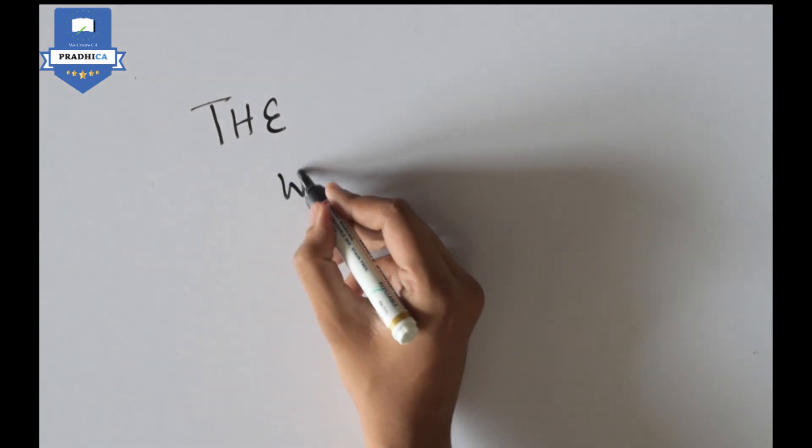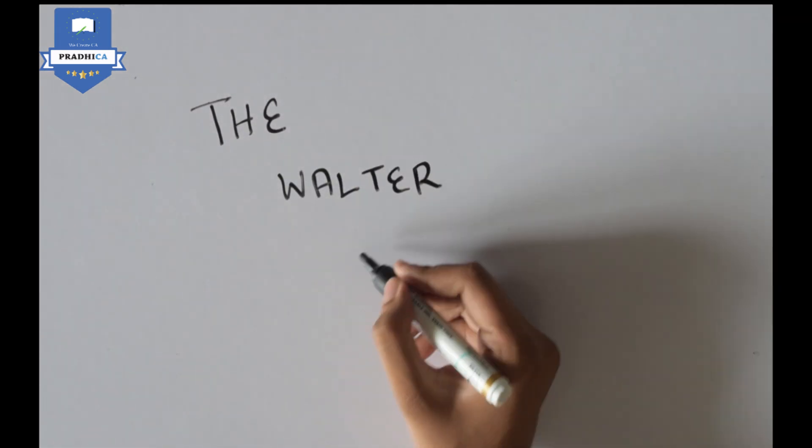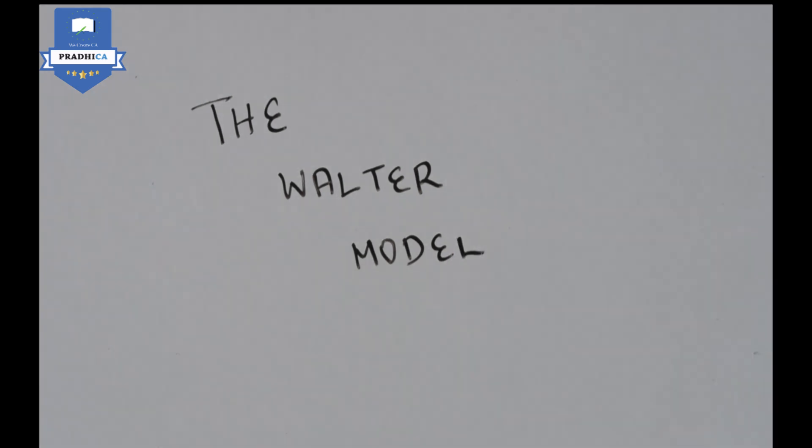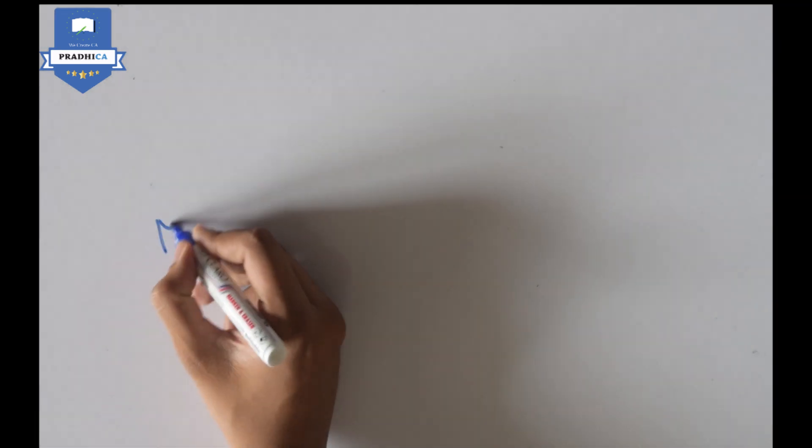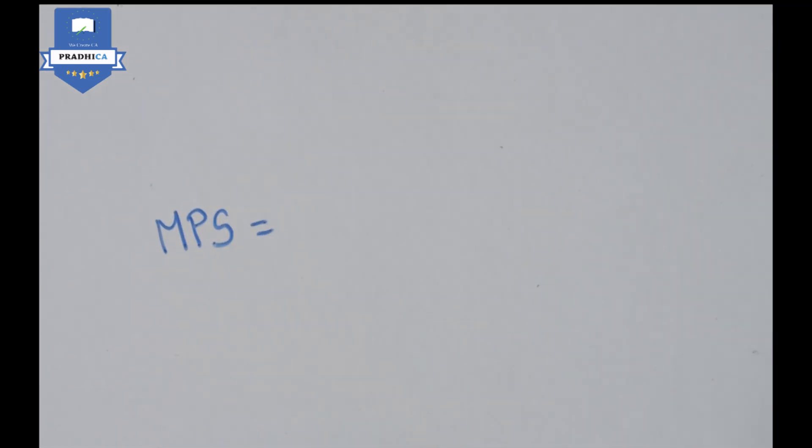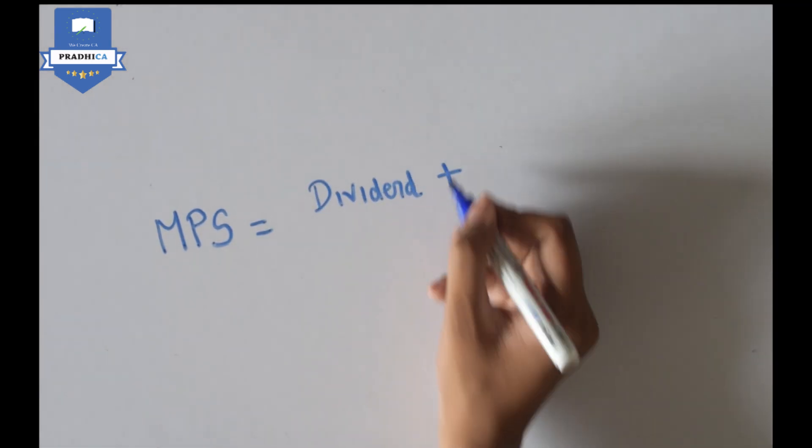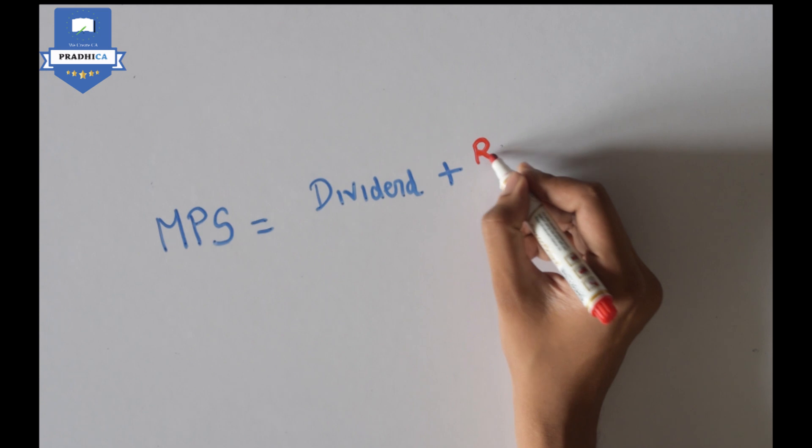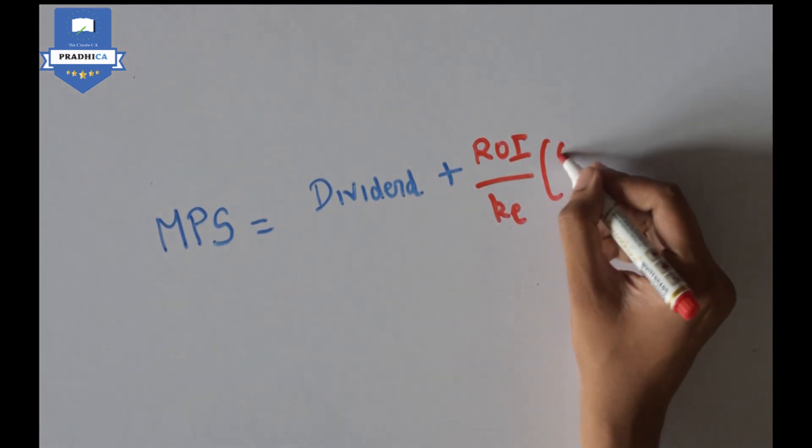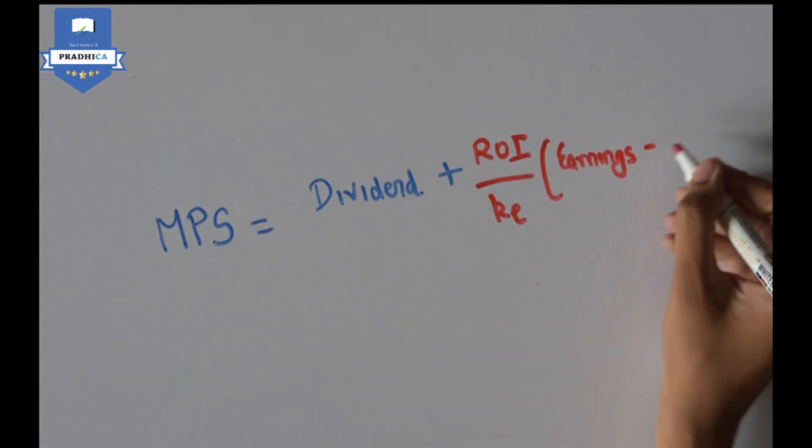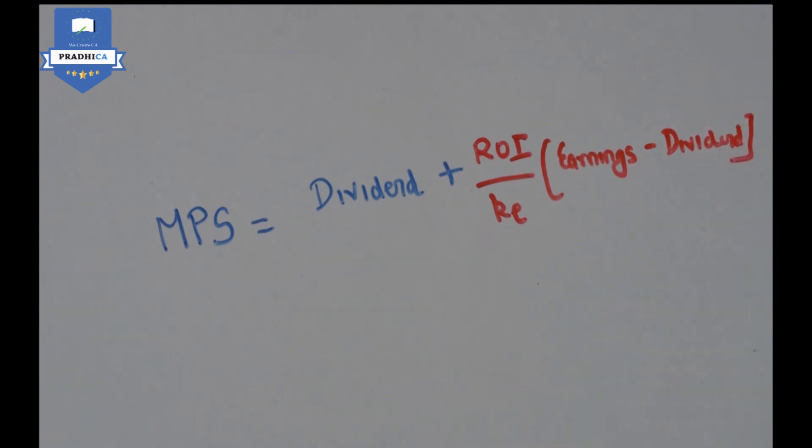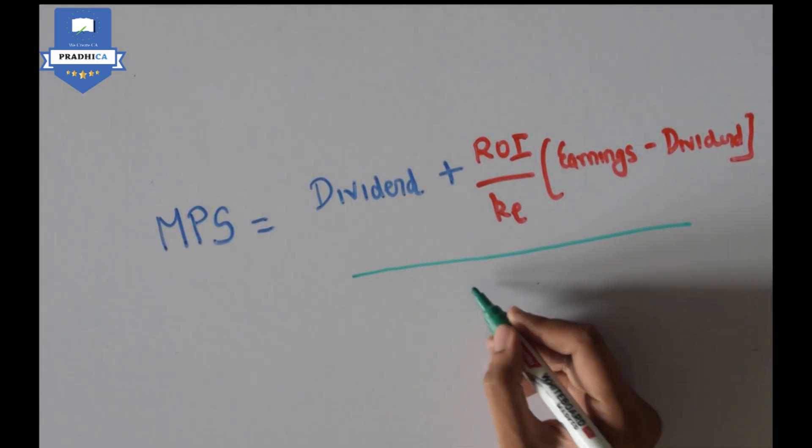The Walter model of dividend valuation. Walter says that the market price of shares of a company equals the dividends earned by the shareholders plus the return on investments of the projects divided by the cost of equity into the excess of earnings over dividends, the whole discounted using the cost of equity.